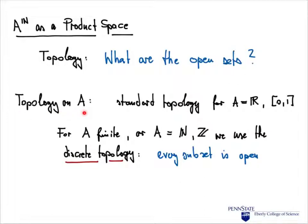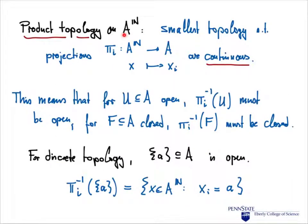We start with the topology on A, our base space the alphabet. If the alphabet happens to be the reals or the compact unit interval, we can just use the topology given by the open intervals. If A is finite, or if it is the set of natural numbers or integers, we use the discrete topology. The discrete topology is specified by saying that every subset is open — it makes no distinction between sets that are open and not open; everything is open.